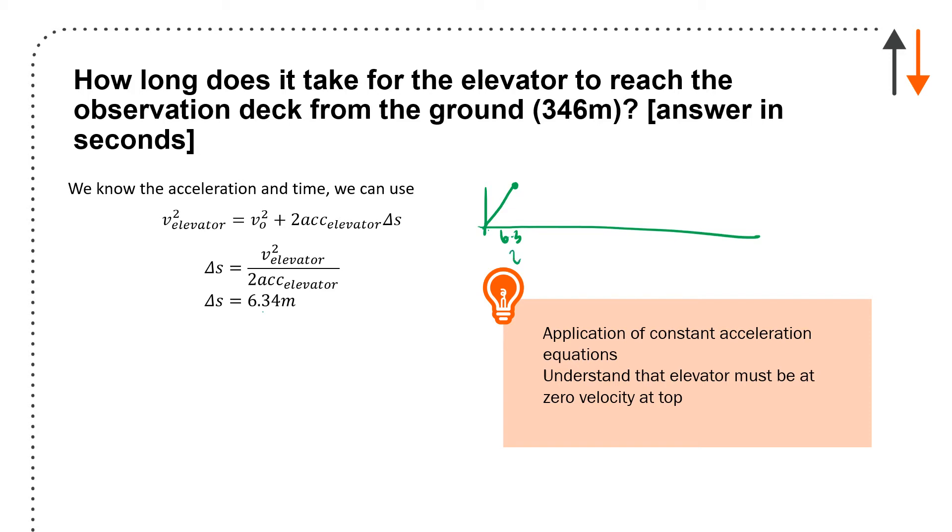In about 2 seconds it reaches its maximum velocity. Next, the elevator travels at constant velocity until it needs to decelerate, because you don't want the passengers to get out at 22 kilometers per hour—you want them at zero. So you go from 22 to zero again, which takes the same 2.3 seconds and the same distance, 6.3 meters.